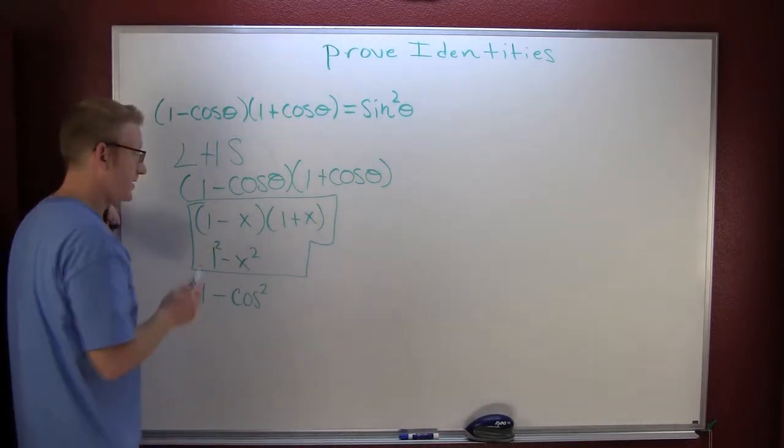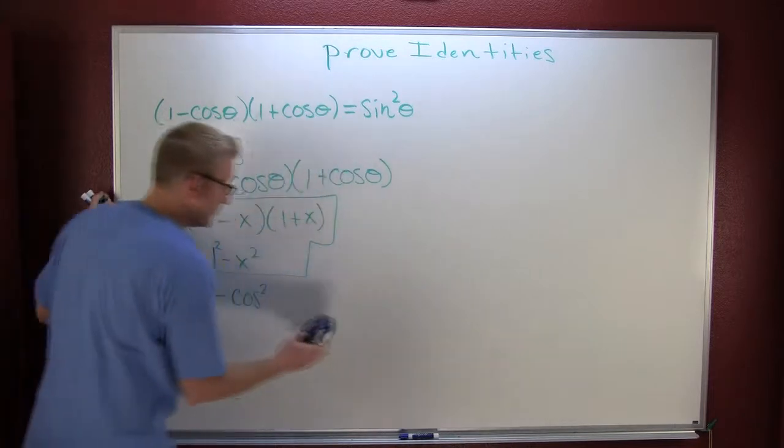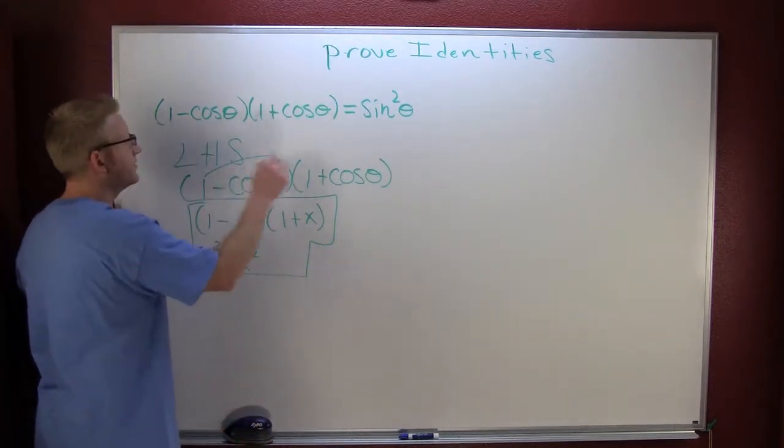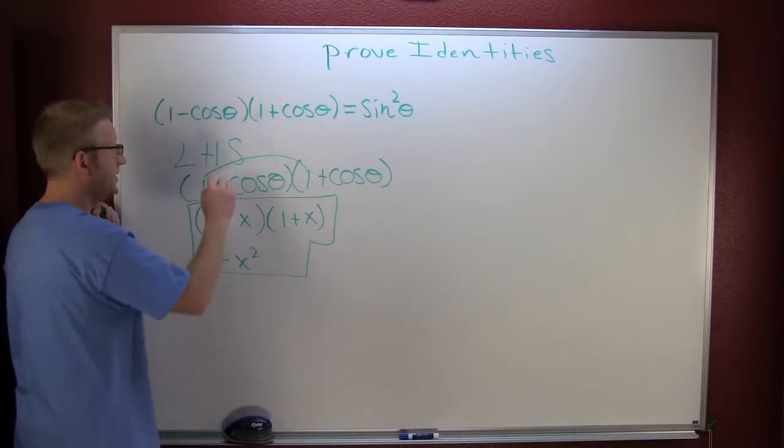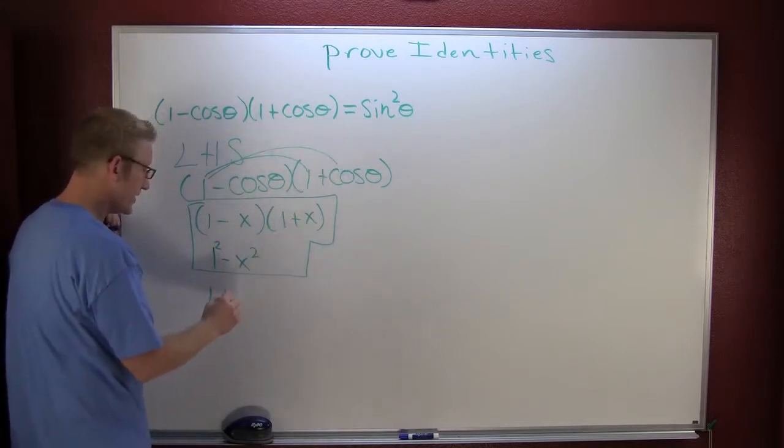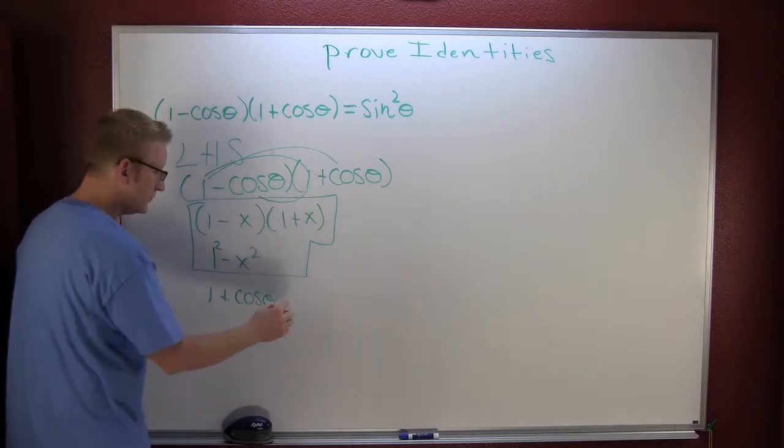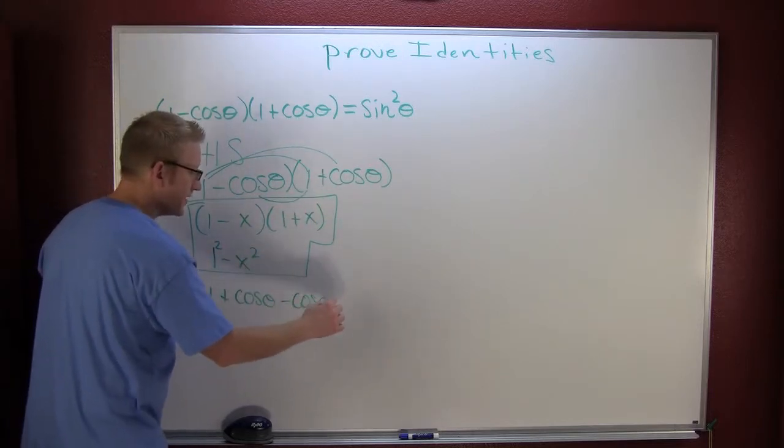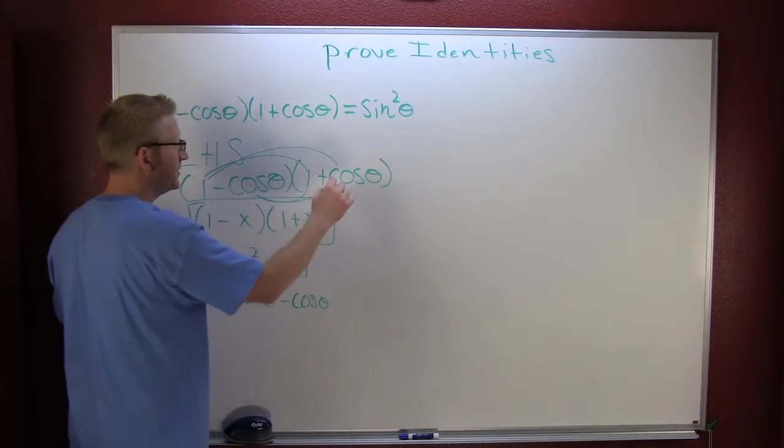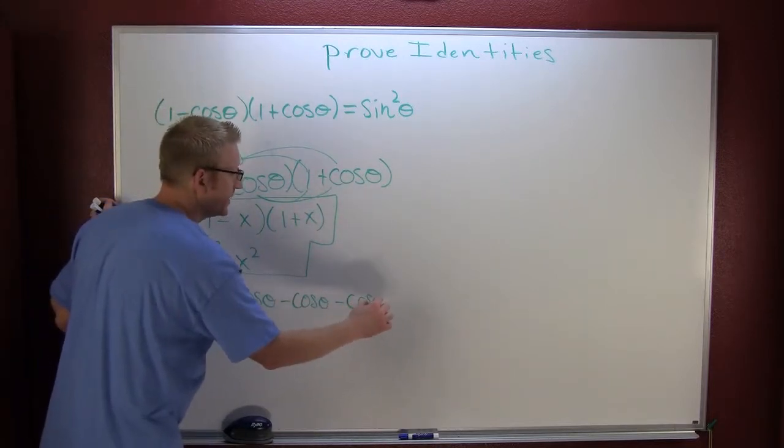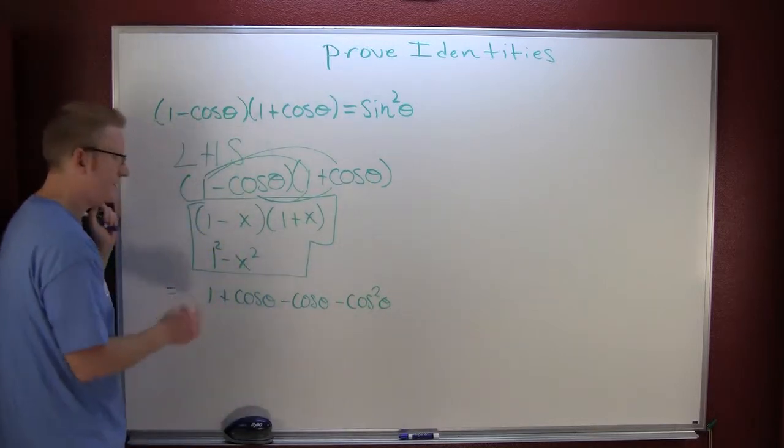Perhaps you didn't want to use the side work, it's totally legitimate. You could have taken the first, the outer plus cosine theta, the inner minus cosine theta, and then finally last, that's a minus cosine times cosine, cosine squared theta.